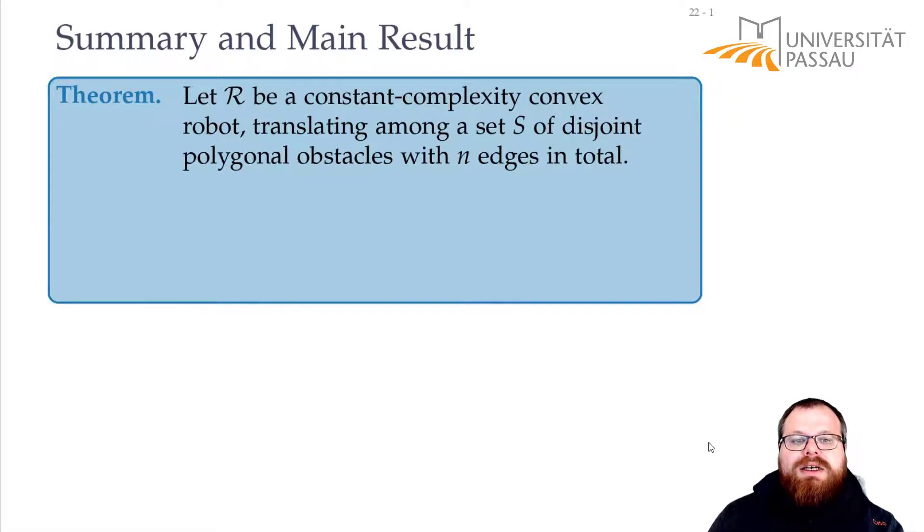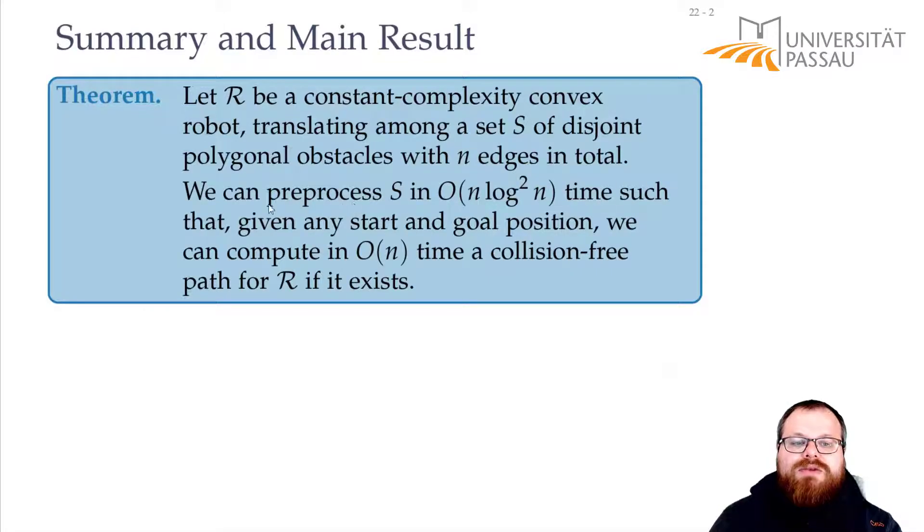Let's summarize. If we have a constant complexity convex robot, and we want to translate it among a set of disjoint polygonal obstacles with n edges in total, then we can preprocess the set of polygonal obstacles in O(n log² n) time such that for any start and goal position, we can compute in O(n) time a collision-free path for the robot if it exists.